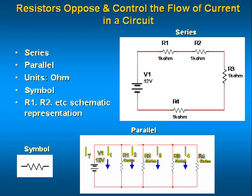In a series circuit, the same current flows through all of the components, one after the other, and the sum of the voltage drops across each resistor adds up to be equal to the source voltage.